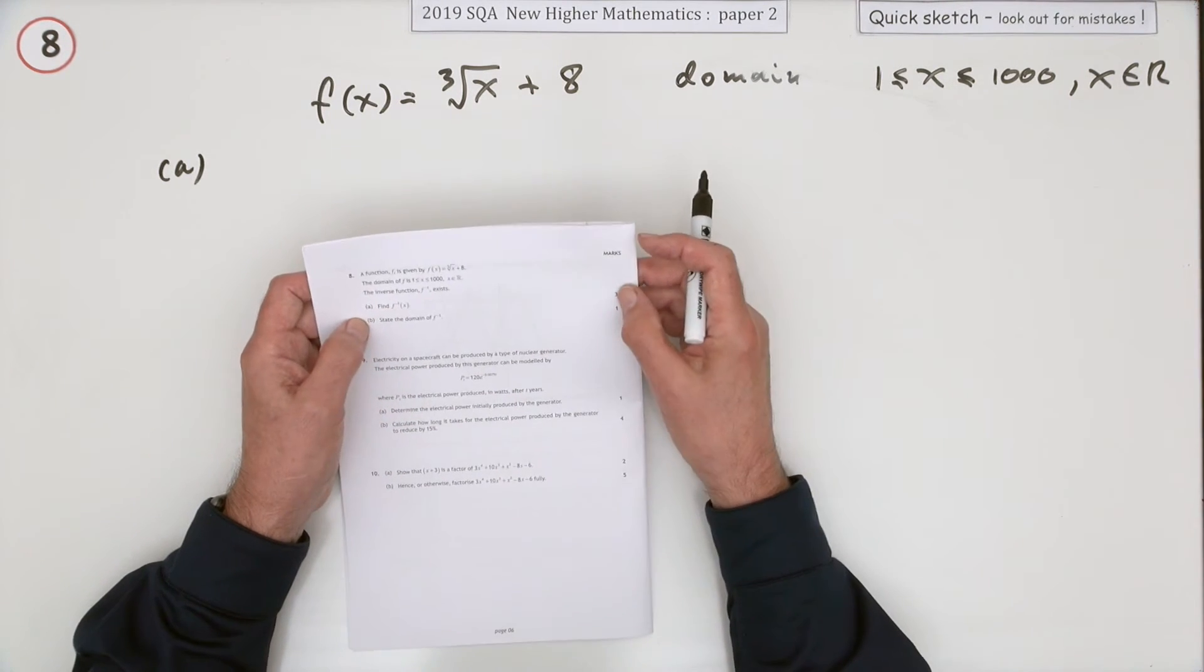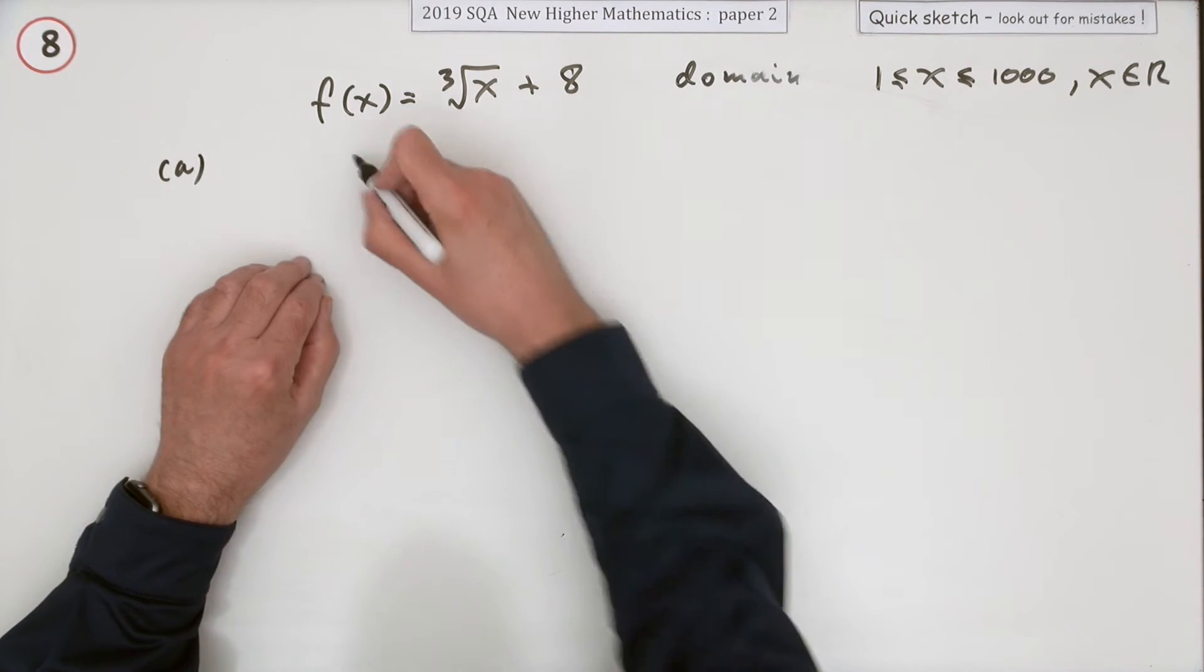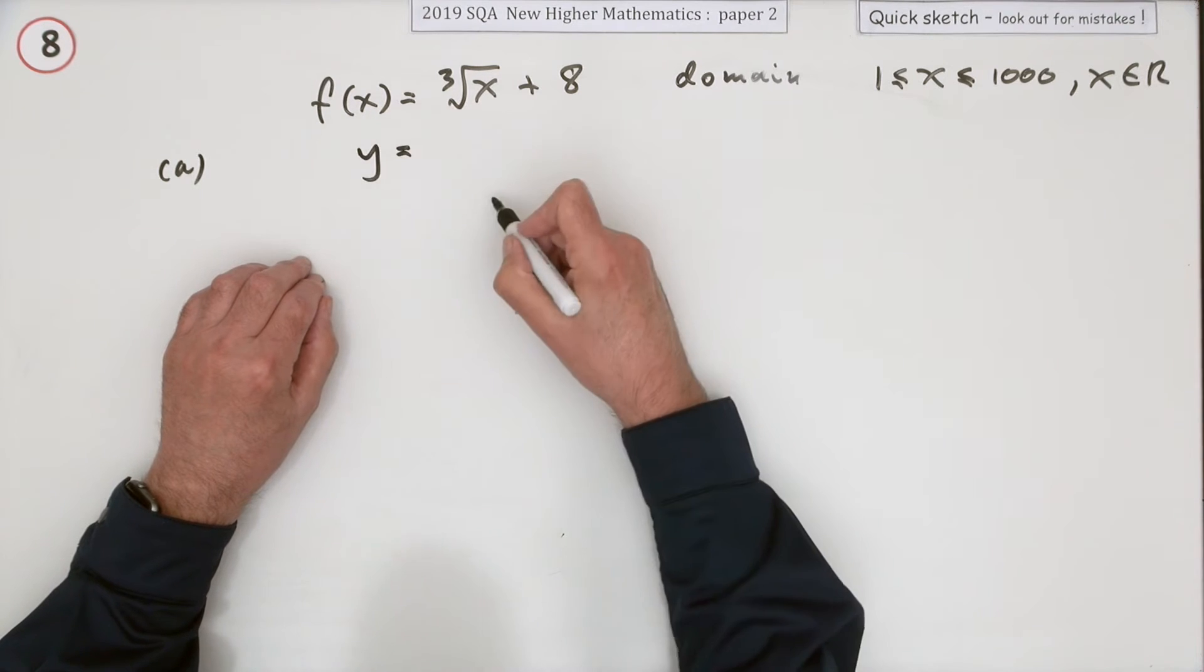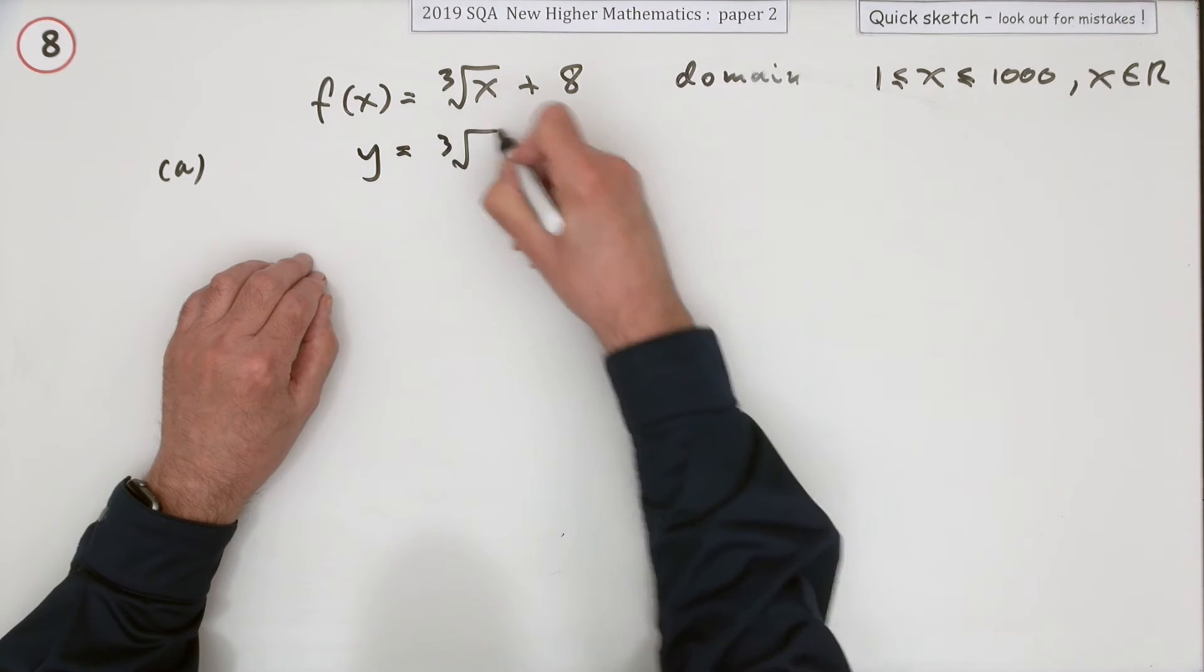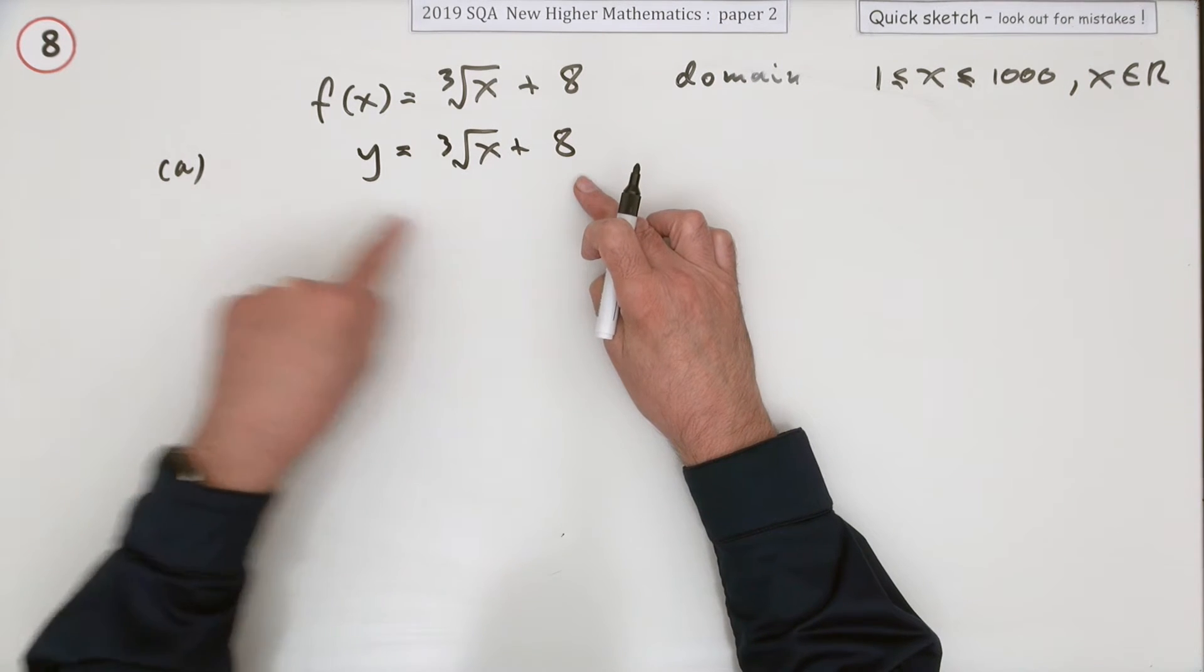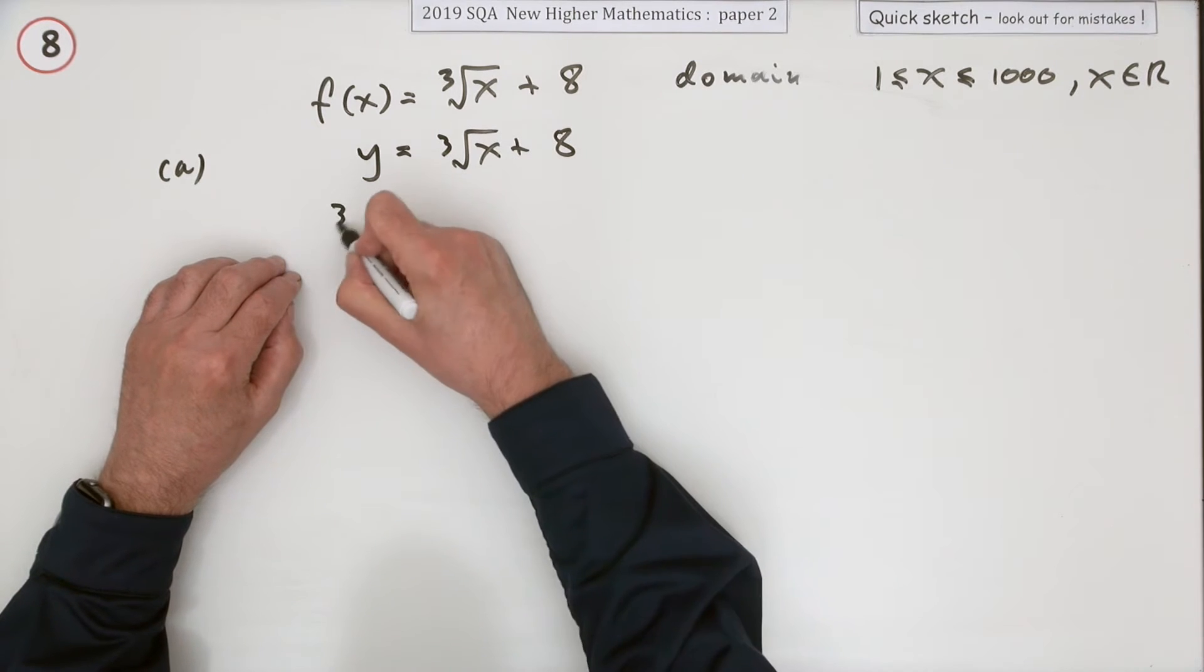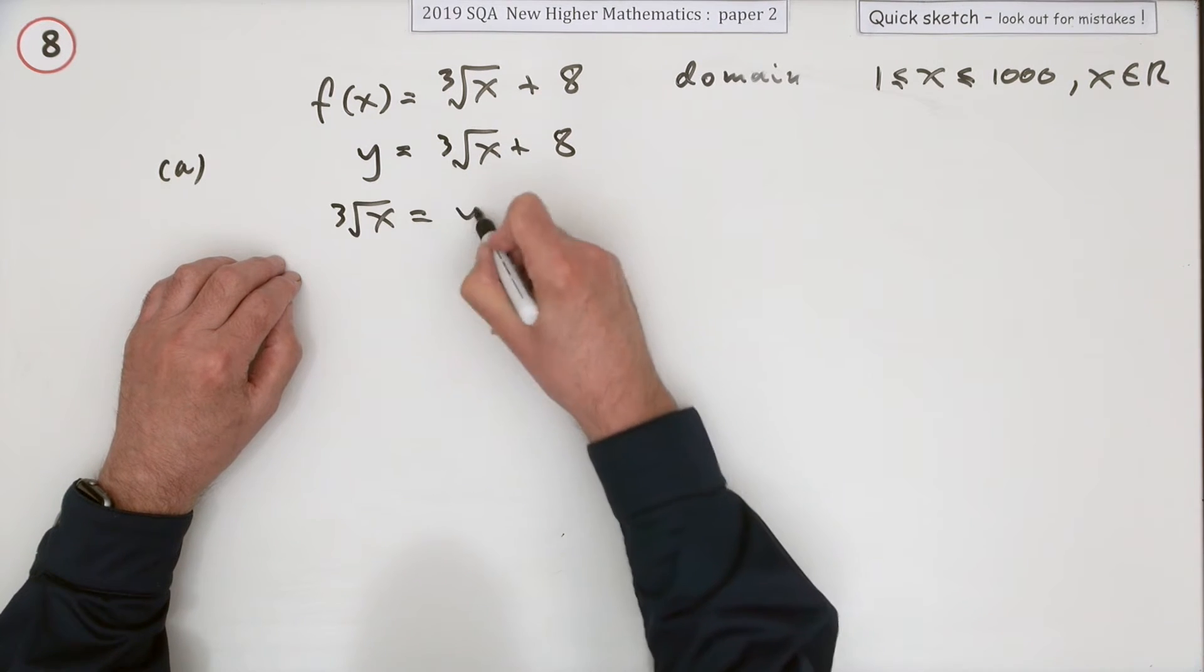Find the inverse function for three marks. There's several ways of doing that. The way you probably do is just to say the answer will be y, and then rearrange it to read x equals. So it'll be the cube root of x will equal y minus 8.